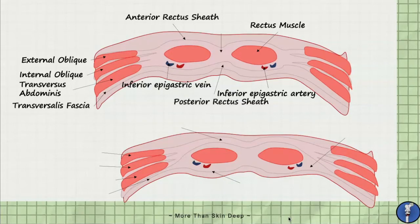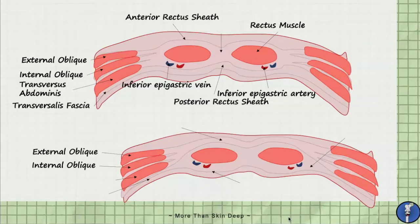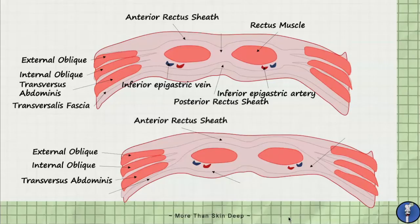Below the arcuate line, the anatomy is a bit different. Here, the anterior rectus sheath is very thick, as the aponeuroses of the external oblique, internal oblique, and transversus abdominis all make up the anterior rectus sheath, superficial to the rectus abdominis muscle bulk. Posterior to the rectus abdominis is the posterior rectus sheath, which is very thin, as it only contains the transversalis fascia.